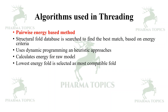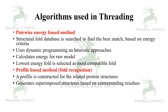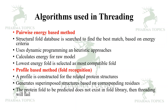The second concept is the profile-based method of fold recognition. A profile is constructed for the related protein structures, and superimposed structures are generated based on corresponding residues. If the protein fold to be predicted does not exist in the fold library, then threading will fail.